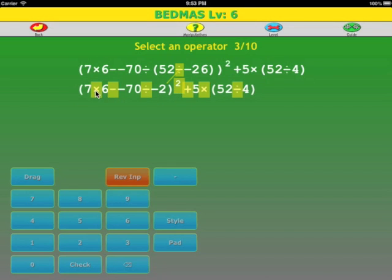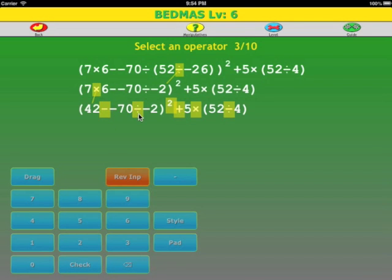We have multiply, subtract, divide. We will do multiplication and division from left to right. 7 times 6 is 42. Now we do the division. Negative 70 divided by negative 2. The answer is positive because there is two negatives. 70 divided by 2 is 35.